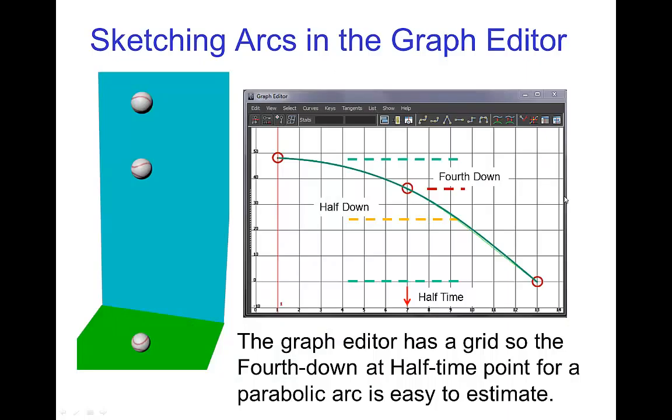Now this technique is even simpler when you want to sketch a parabolic arc in the graph editor. For example, for this ball that's falling down, this first key frame is at the top. The last key frame is at the bottom. The key frame that's halfway in time between those two is here. And this is easy to find because the graph editor has a grid. And so this is pretty easy to either estimate or just count out.